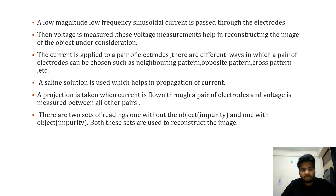A projection is taken when current is flowing through a pair of electrodes and voltage is measured between all other pairs. There are two sets of readings obtained: one without the object, known as the homogeneous set of readings, and one with the object placed inside the cavity, known as the inhomogeneous set of readings. Both sets are used to reconstruct the image using reconstruction algorithms.